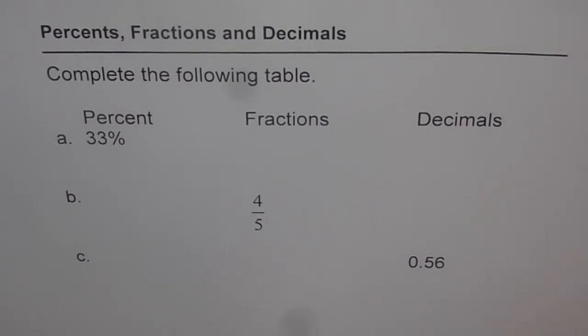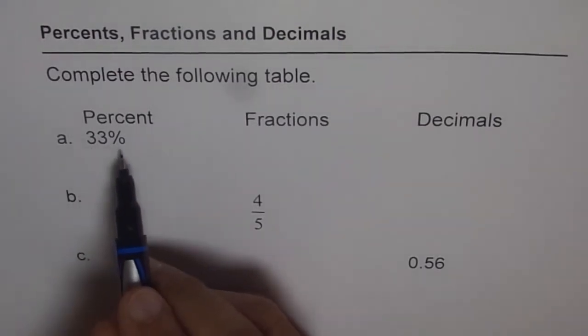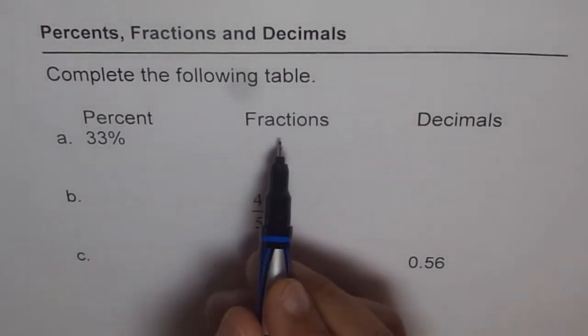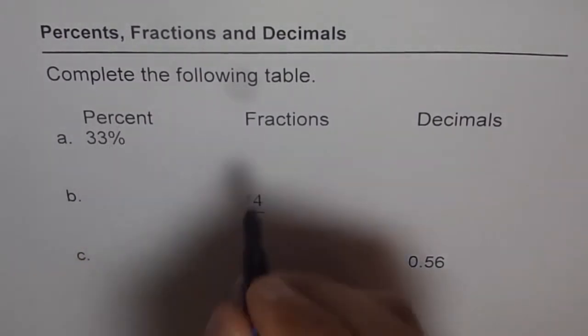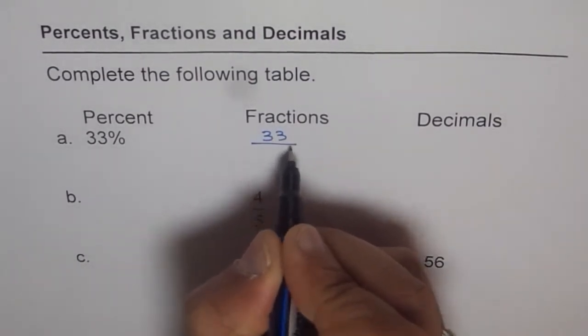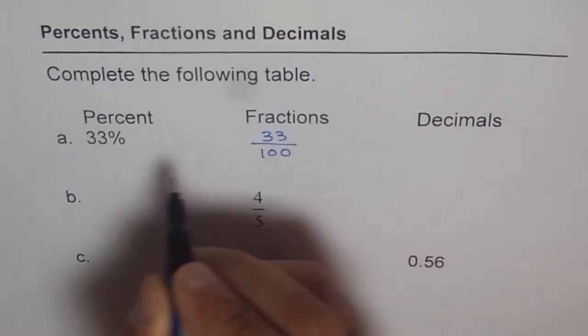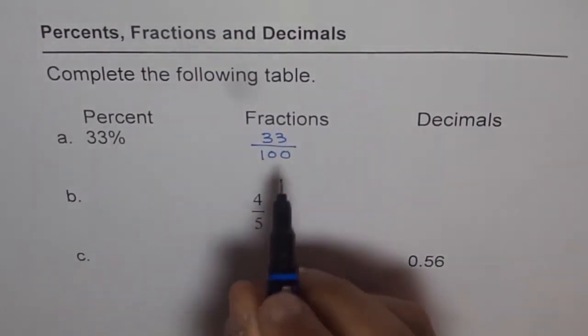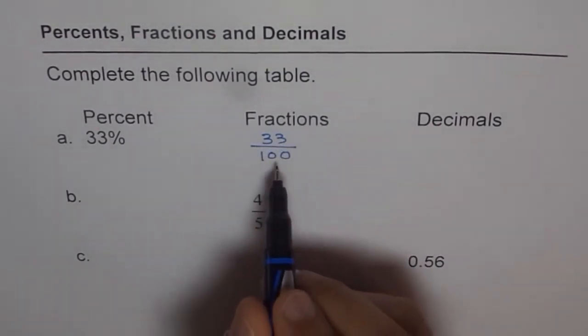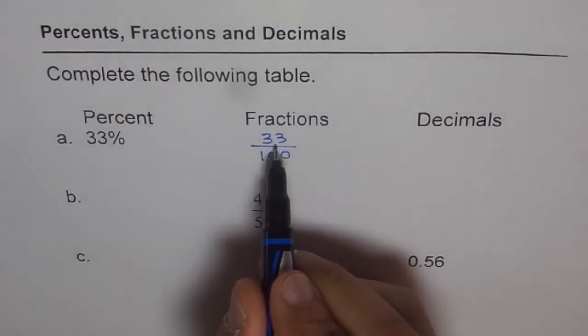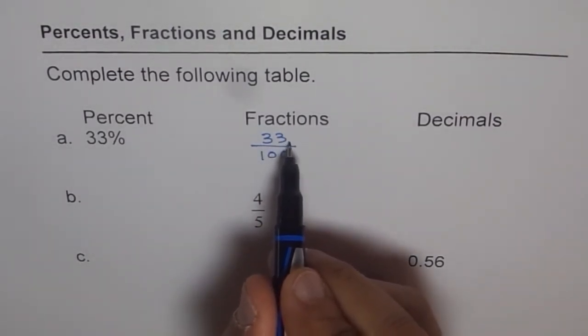That should help you and give you a lot of confidence. Now let's do it. When we say 33% and we have to write it in fraction, we write percentage out of 100. So we write 33 out of 100 - that is the meaning of percent sign. Percent means out of 100, so 33 over 100.